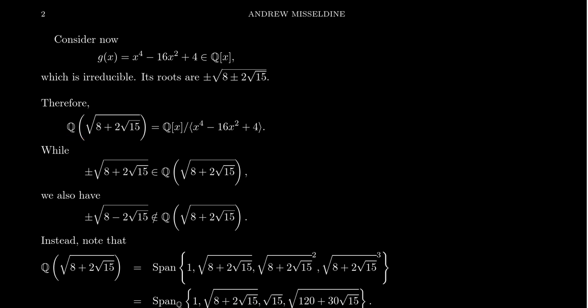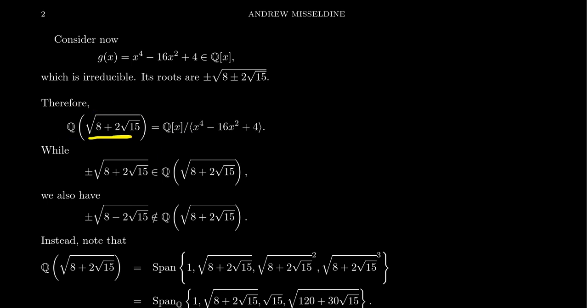Take Q adjoined with that irrational number α. By Kronecker's theorem, this field — where you take a root of this irreducible polynomial and adjoin it to the rationals — would be the same as taking Q[x] modded out by the irreducible polynomial x⁴ - 16x² + 4. This gives us a field in which G(x) has a root. It doesn't just have one root — it actually has two, because the field includes α = √(8 + 2√15) and also its additive inverse -√(8 + 2√15).